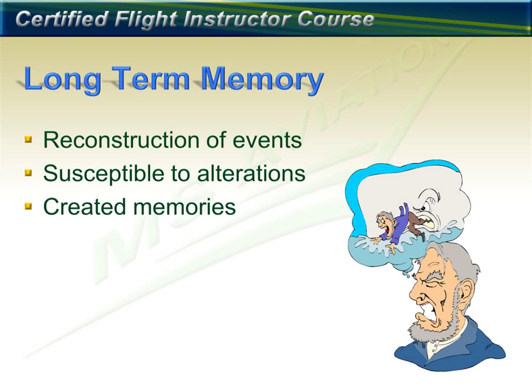Long-term memory is a reconstruction of an experience and is not an exact recall. Memories are susceptible to alteration over time due to personal biases, perceptions, and individual motivations. In some cases, memories can be created and believed as if they were real, even if they are not. A good example is two people who attended the same event recalling it differently — they may recall events that did not occur, and will disagree until confronted with video or photographs.